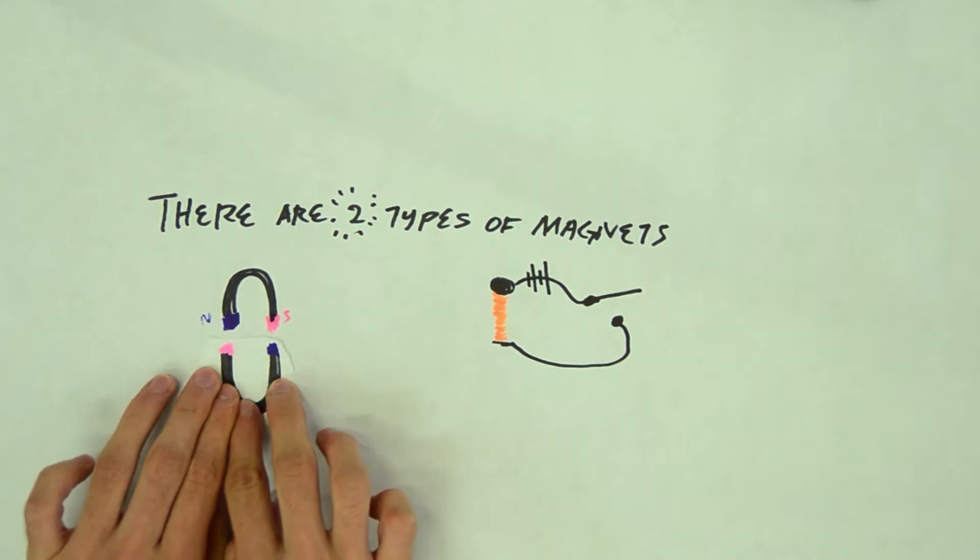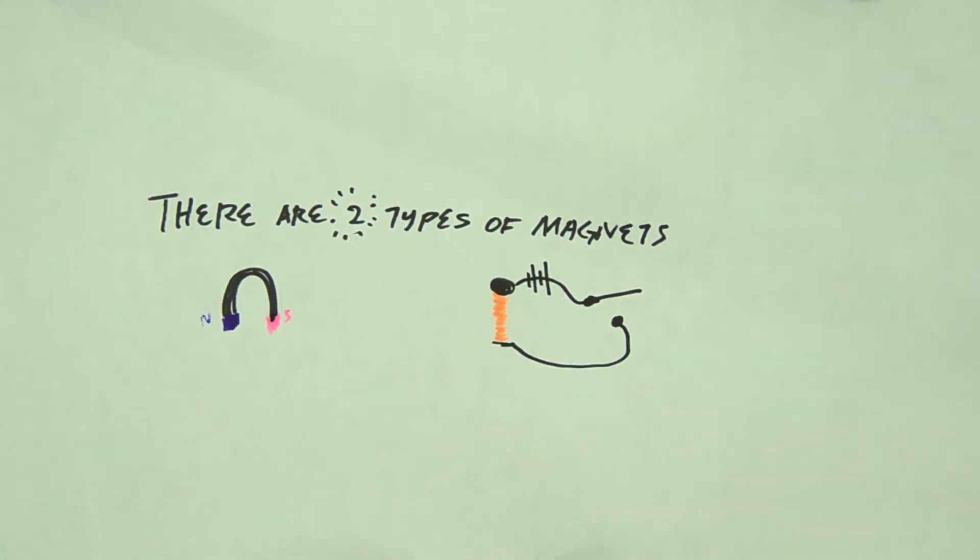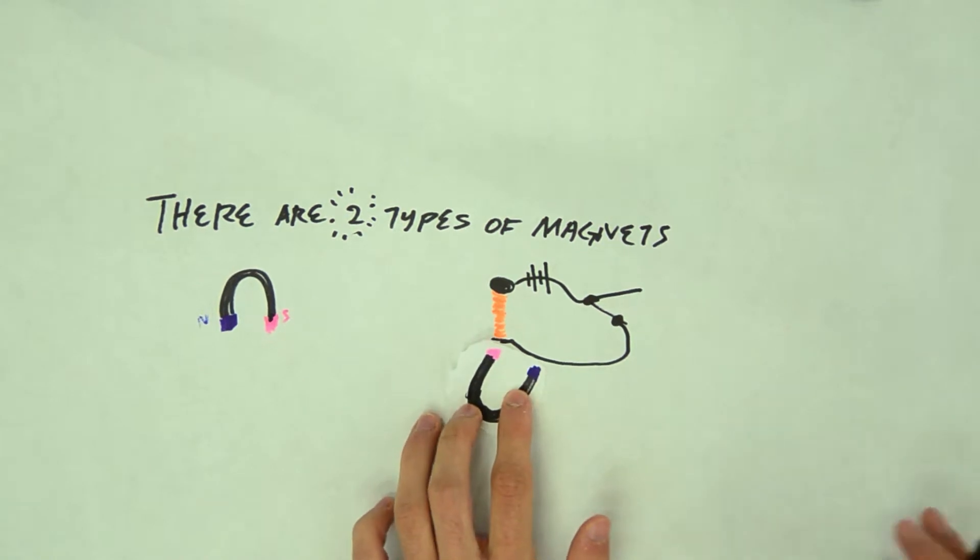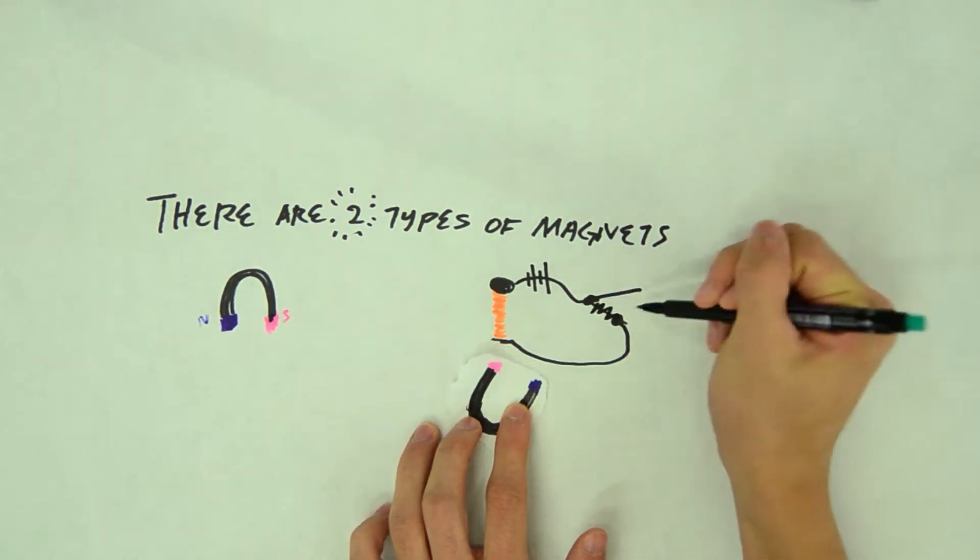When the same magnet is placed near the electromagnet, however, nothing happens. Once the switch is closed and the connection in the circuit is made, the electromagnet produces its own magnetic field and is able to attract the other magnet.